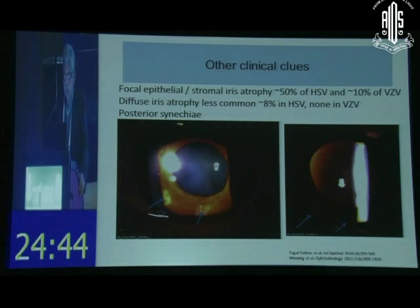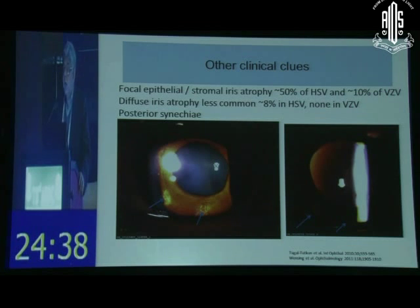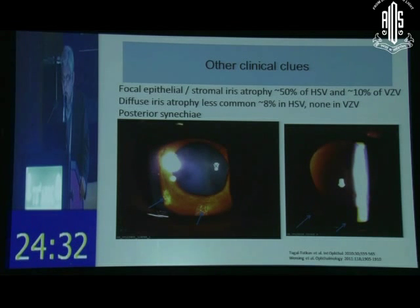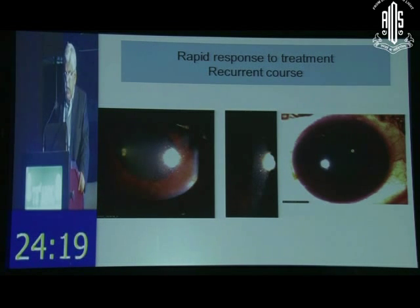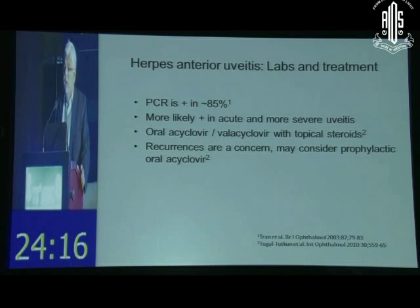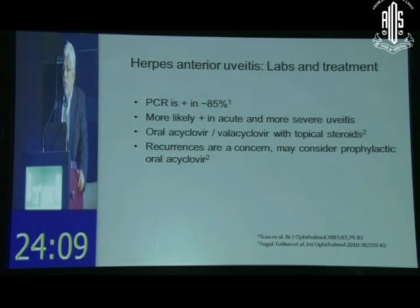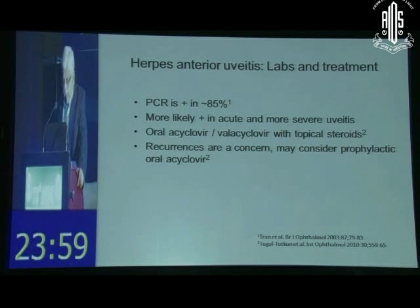Look for other signs like focal areas of iris atrophy. The best technique is trans-illumination — these defects will illuminate very brightly. These patients showed a very rapid response to treatment with topical steroids and oral antiviral drugs. In very severe cases you might do an anterior chamber tap and PCR for HSV. These are treated with oral acyclovir. The major difficulty with these patients is recurrences, and you may need to give long-term prophylactic antiviral therapy.